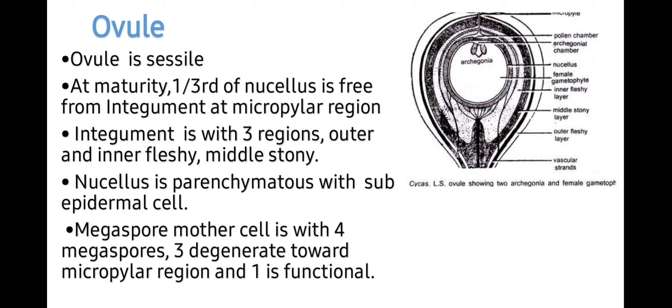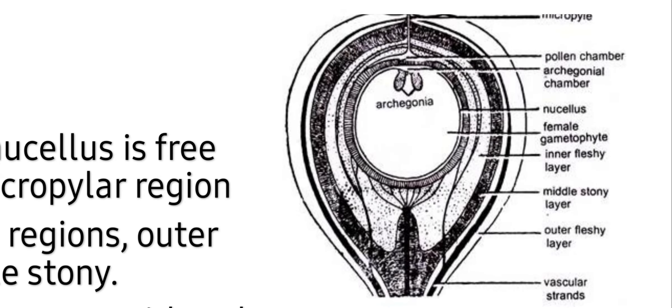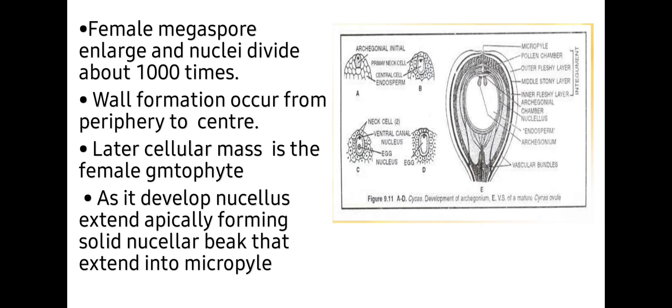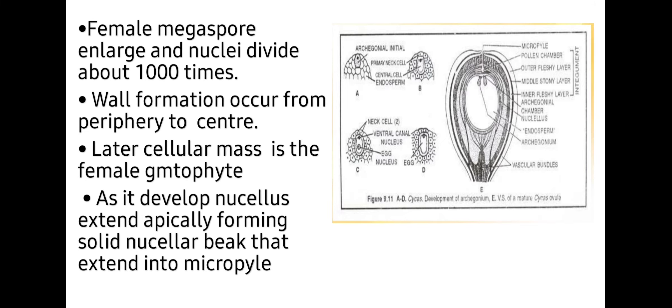The megaspore mother cell gives rise to four megaspores. Three degenerate toward the micropylar region and one is functional. In the enlarged image of the ovule, you can see that the micropylar end is without integument. You can see the pollen chamber where pollen grains rest, and the archegonial chamber where archegonia are present. There is nucellus and female gametophyte, as well as inner and outer fleshy layers, the middle stony layer, and thread-like vascular supply to the ovule. Each megaspore enlarges and the nucleus divides about 1,000 times, with cell wall formation occurring from periphery to center, resulting in the cellular female gametophyte.